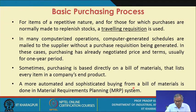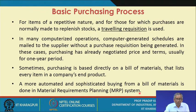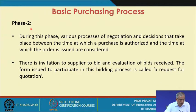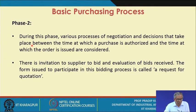A more automated and sophisticated buying from a bill of materials is done in material requirements planning (MRP) systems. The purchase department plays a very important role when you install an MRP system and start working with it in your organization. In phase two, various processes of negotiation and decisions take place between the time a purchase is authorized and the time at which the order is issued.